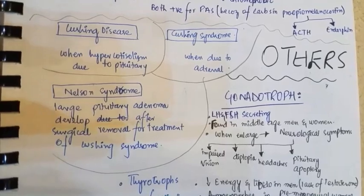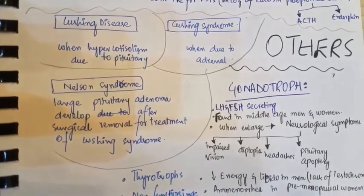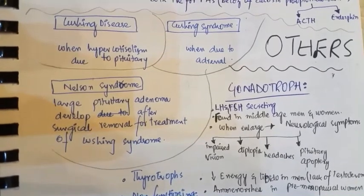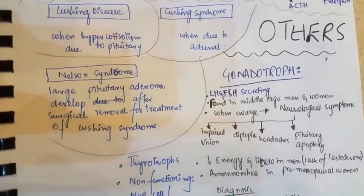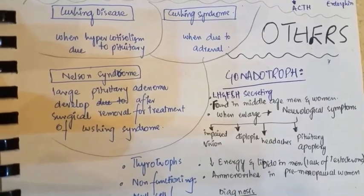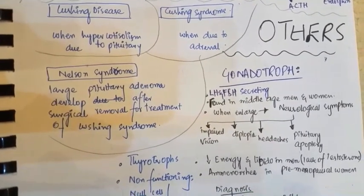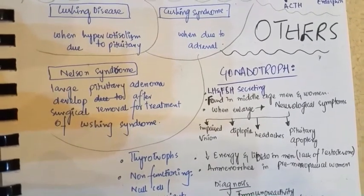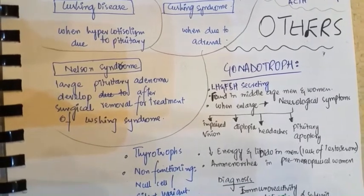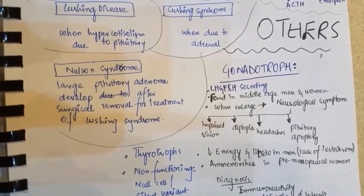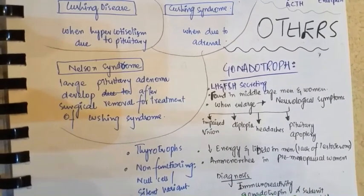Gonadotroph adenomas release LH and FSH. They are found in middle-aged men and women. When enlarged, they produce neurological signs and symptoms including impaired vision, diplopia, headaches, and pituitary apoplexy, as well as decreased energy and libido in men due to increased LH and FSH but decreased testosterone, and amenorrhea in premenopausal women.